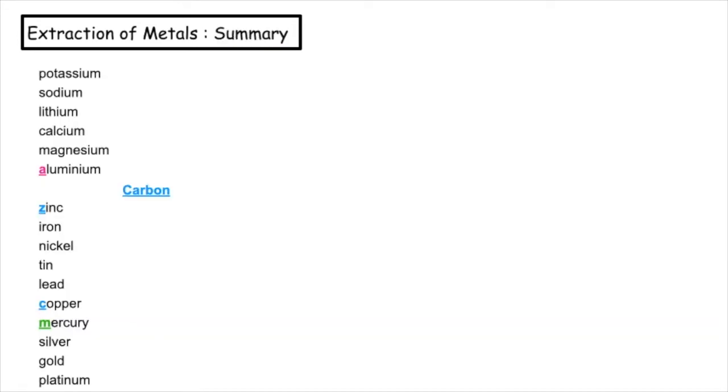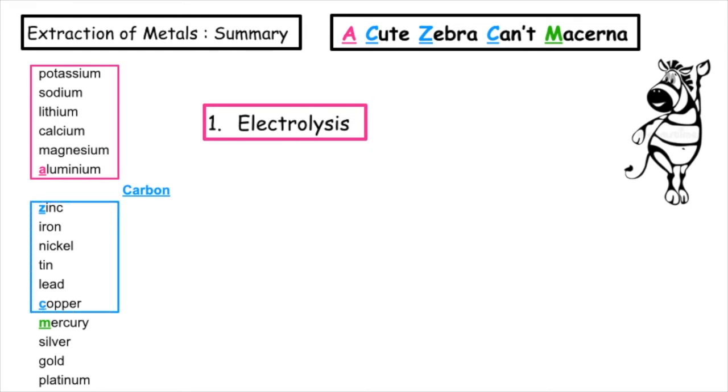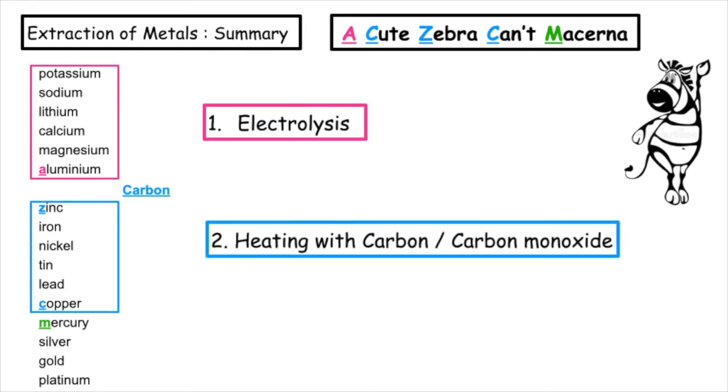The little story that I remember for the different types of extractions of metals is 'a cute zebra can't Macarena.' Aluminium and above in the reactivity series need electrolysis to split them up. Between copper and zinc, we would be heating with carbon or carbon monoxide. Below copper, mercury and below, we would be using heat alone.